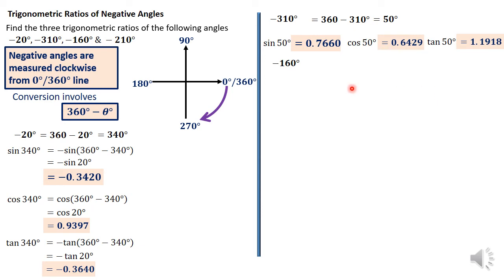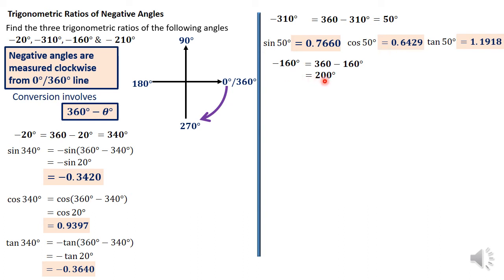Turning to negative 160 degrees, we convert: 360 minus 160 = 200 degrees. For all these angles — they are given as negatives — what we are doing is just 360 minus the given magnitude. Do not create double negatives; simply compute 360 minus 20, 360 minus 310, 360 minus 160, and so on. So negative 160 degrees is the same as 200 degrees.